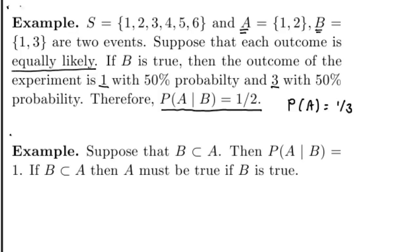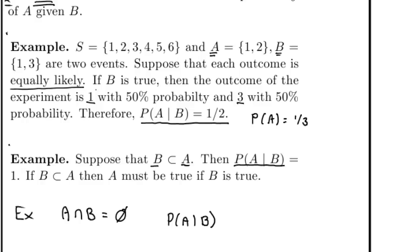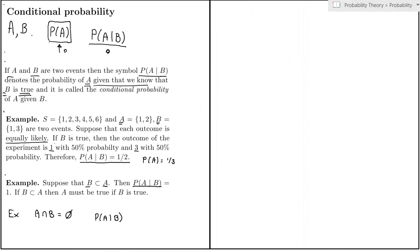Here's another example. Let's say that event B is a subset of event A. In that case, if B is true, A must be true. Since the conditional probability answers the question 'what is the probability that A is true given that B is true,' this must be 1, or 100% — knowing B is true guarantees A is true. Similarly, if A and B are mutually exclusive and have no items in common, then if B is true, A must be false, so P(A|B) must be 0.